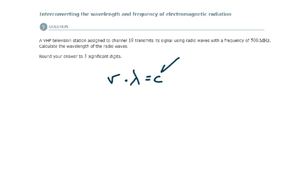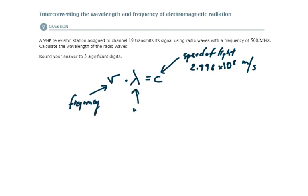c is a constant and it is the speed of light in a vacuum, which is 2.998 times 10 to the 8 meters per second. Nu is frequency, and lambda is wavelength.